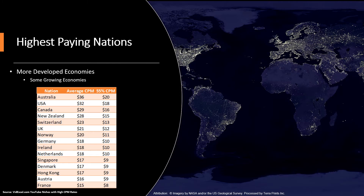In terms of the highest paying nations in terms of CPM, which runs into RPM as we discussed earlier, what we see here is some of the most developed economies and nations in the world. This is what we would expect as advertisers are willing to pay a little bit more for these countries as their populations have more disposable income on average, so advertisers can expect a greater return on their advertising dollars. Initially we see Australia is leading off here, which is a little bit interesting personally, but there's no real shockers on this list — these are all pretty well developed economic areas with larger audiences.